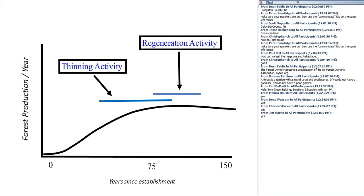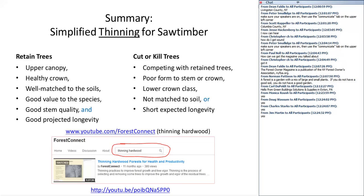To summarize with a simplified prescription for thinning for saw timber: you'll want to retain trees that are in the upper canopy, that have a healthy crown, are well matched to the soils, have good value for the species, good stem quality, and good projected longevity. That 'and' is important — we want to try to obtain all of those attributes in our trees.